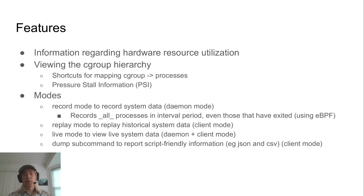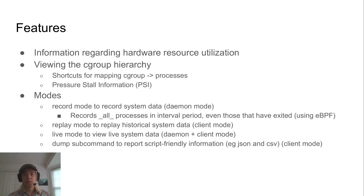BELOW supports a variety of operating modes. The first is record mode — think of it like the daemon mode. It collects all the system data every couple of seconds, however you configure it. BELOW also records all processes for an interval period, even those that have exited before the collection, by hooking into the kernel using an eBPF program. BELOW also has replay mode — the terminal user interface client mode — which you can use to view historical data; this is the primary interface. Next is live mode, which gives you the latest information on the system, like running top or htop. And finally, there's a dump subcommand — the scripting interface — where you can get output as JSON, CSV, or readable text.